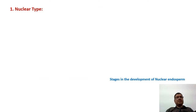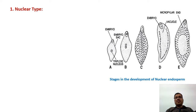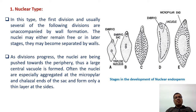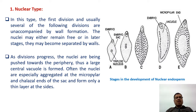Nuclear type: in this type, the first division and usually several of the following divisions are unaccompanied by wall formation. The nuclei may either remain free or in later stages they may become separated by walls. As divisions progress, the nuclei are pushed towards the periphery, thus a large central vacuole is formed. The nuclei are often especially aggregated at the micropylar and chalazal ends of the sac, forming only a thin layer at the sides.